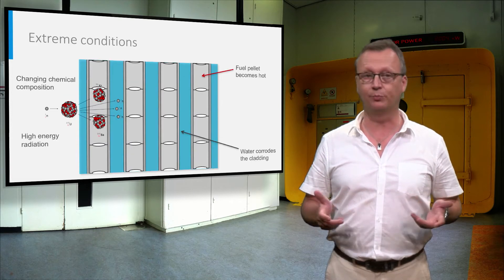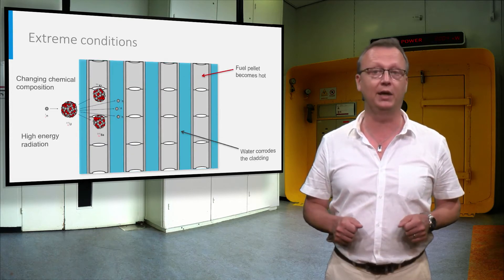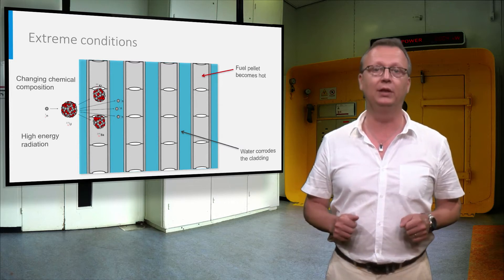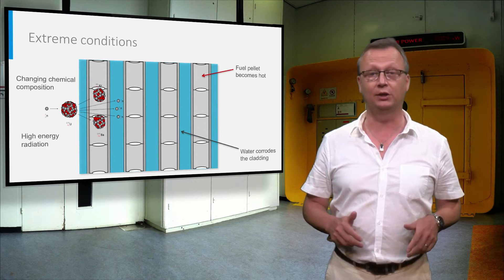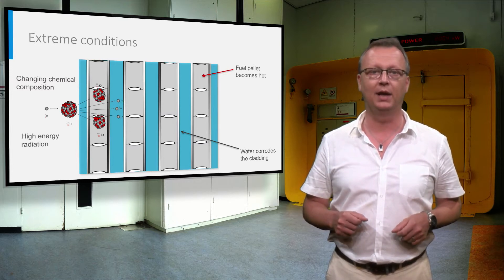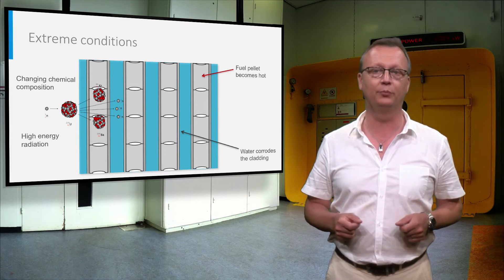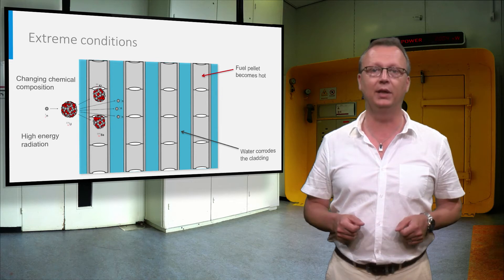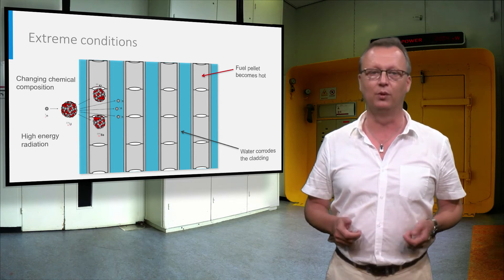The fuel is exposed to very high levels of energetic radiation, it has a high temperature as a result of the heat produced in the fission process, it has a changing chemical composition because of the fission products formed, and its cladding is exposed to high temperature water. We will look in this video how this affects the integrity and life of the fuel.